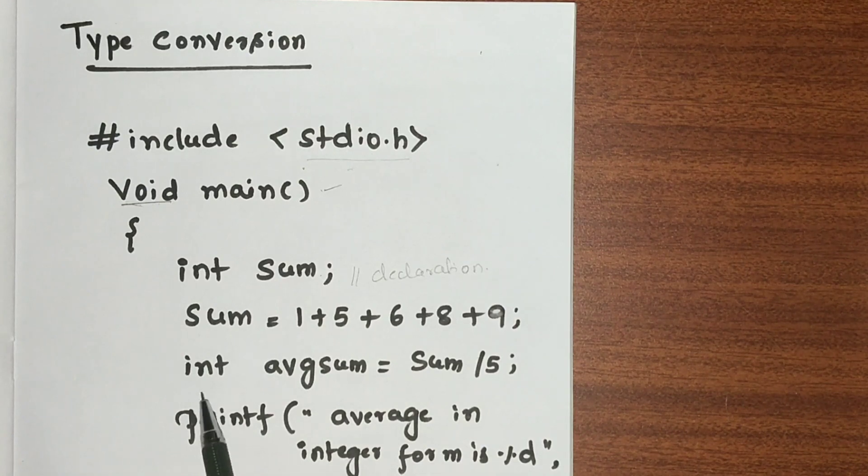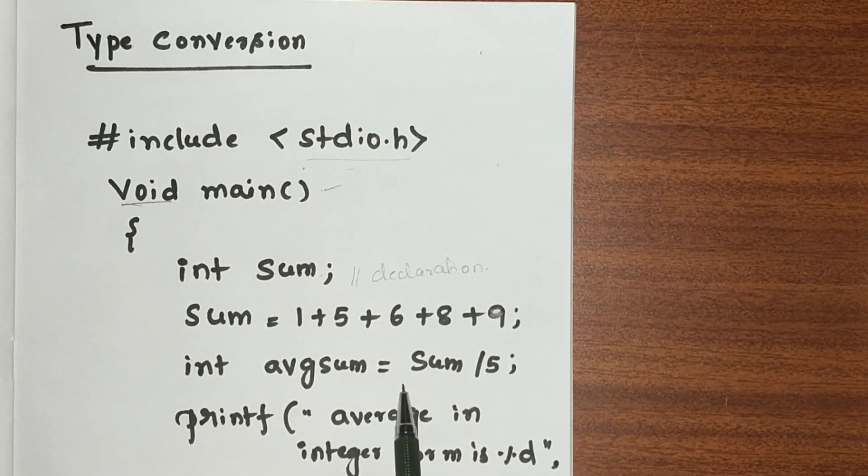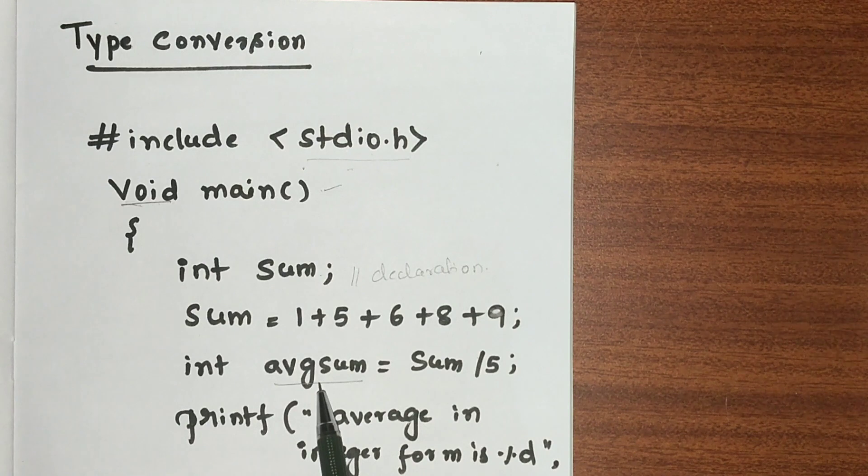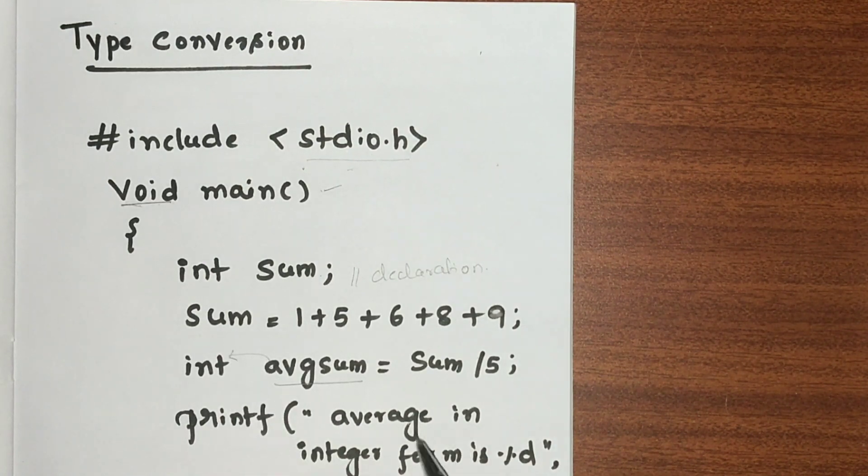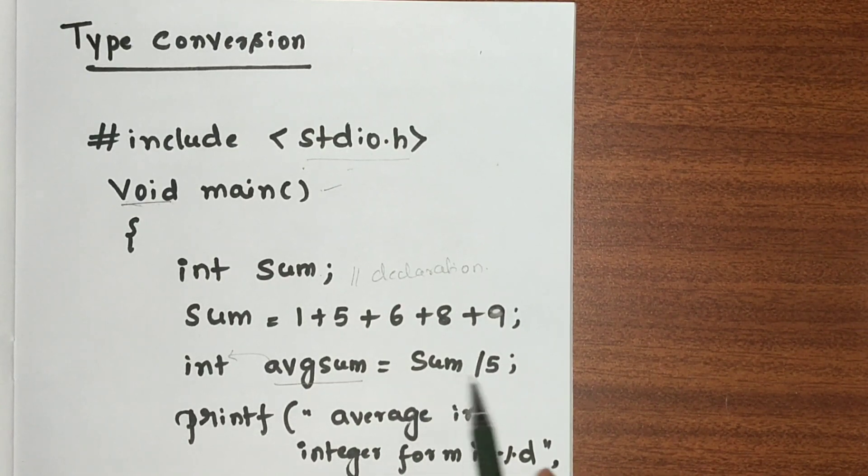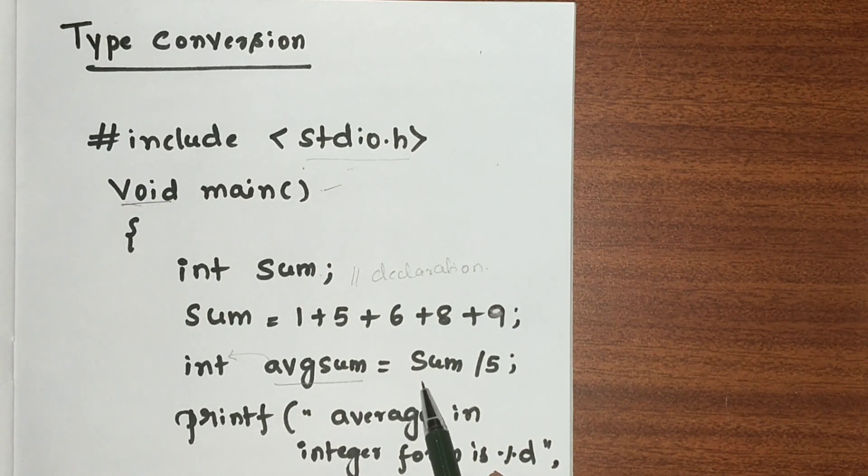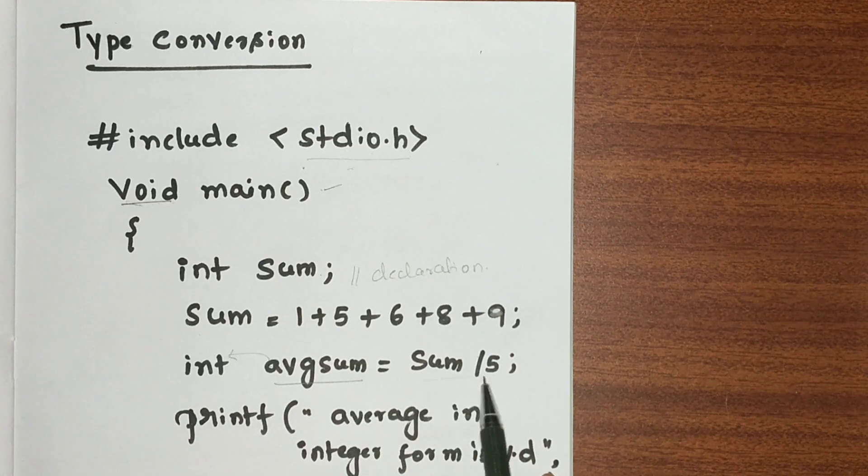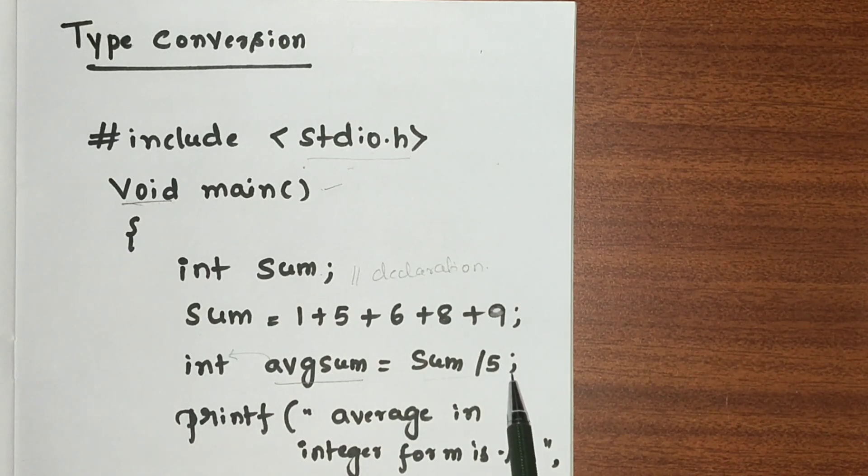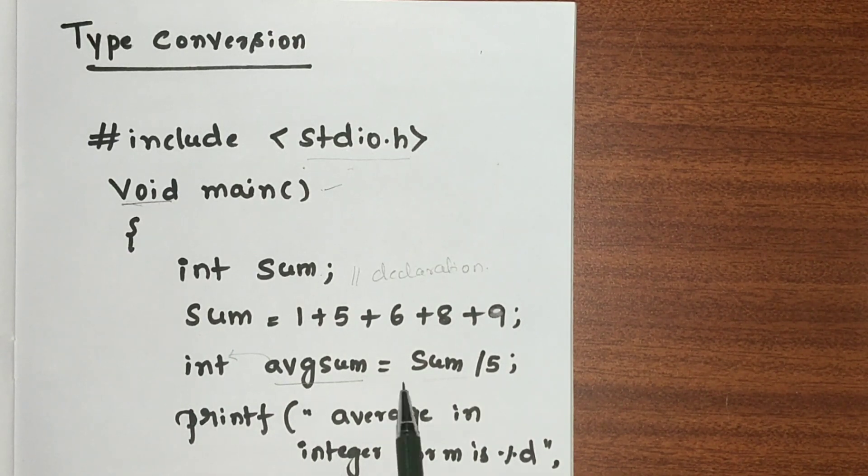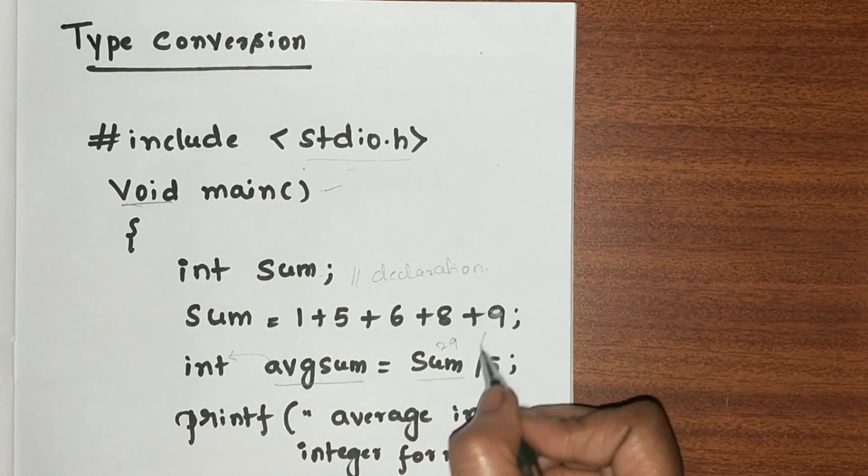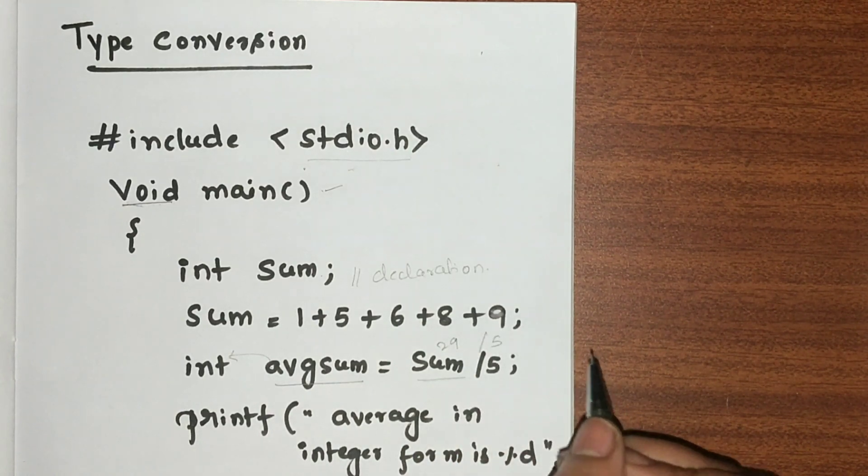Now again, int avgsum = sum / 5. Here avgsum is one more variable I am declaring with data type integer, and I'm initializing it with a formula: sum divided by 5. What does avgsum hold? The sum is 29 divided by 5, so the answer should be 5.8. However, avgsum will store this value as an integer.